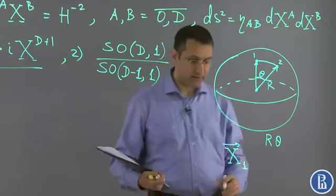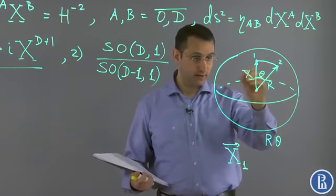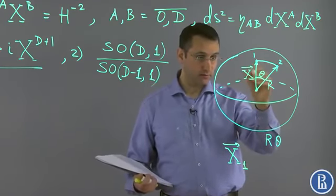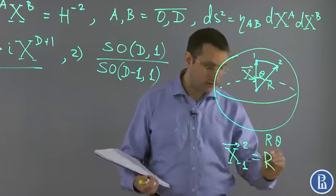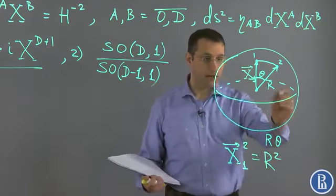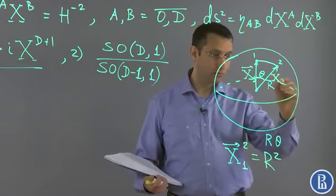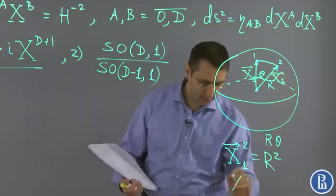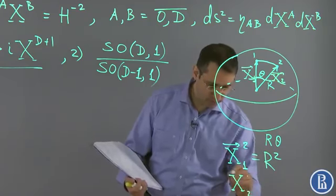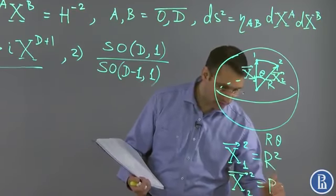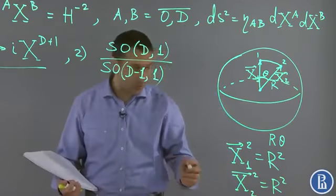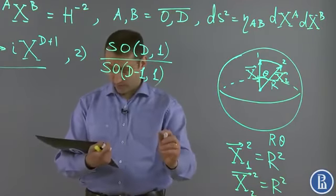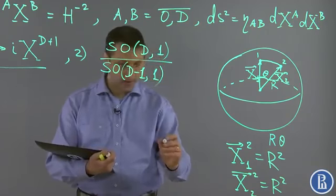We have two vectors x1, a vector defining this point laying on the sphere, and x2, a second vector laying on the sphere. To define this we just take the scalar product x1·x2.